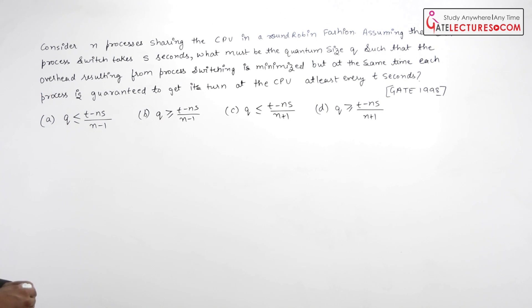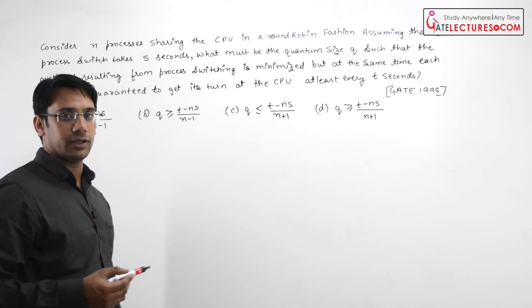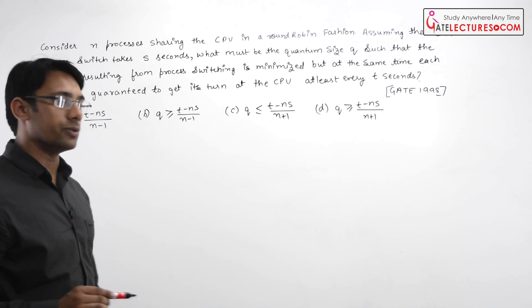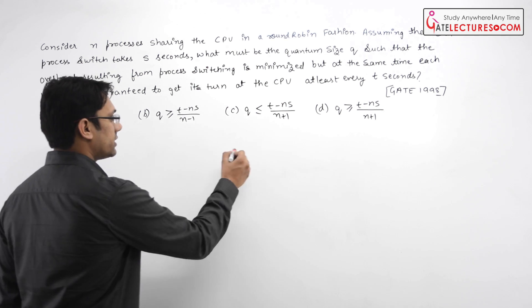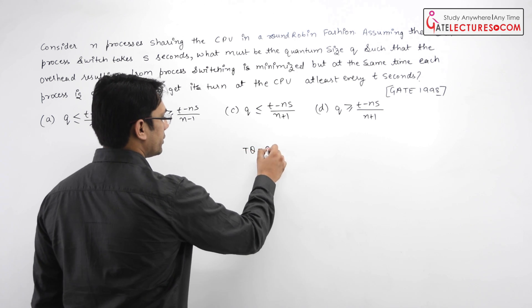What they are saying is we are using a round robin algorithm and the time quantum size is Q. So this is the time quantum size Q.